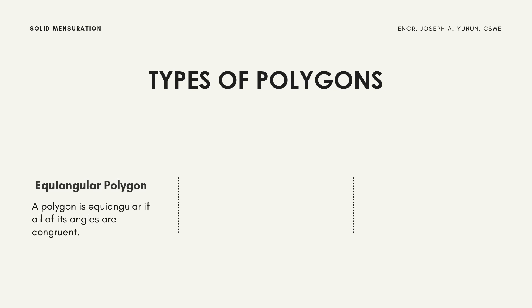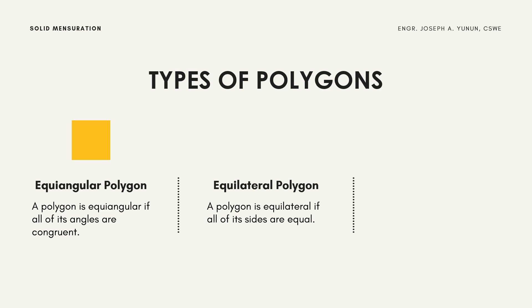Types of polygons: an equiangular polygon is one where all of its angles are congruent. One example is a square, where all interior angles are 90 degrees. An equilateral polygon is one where all of its sides are equal — for example, an equilateral triangle where all sides are equal.